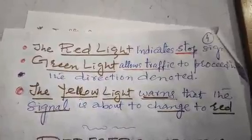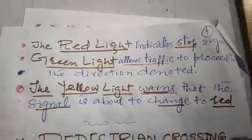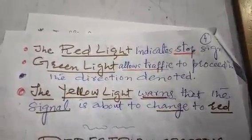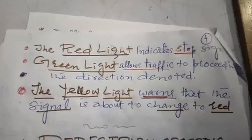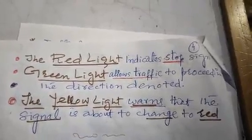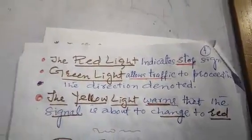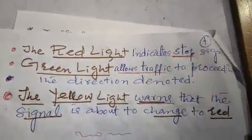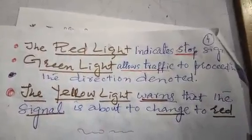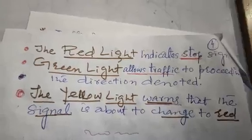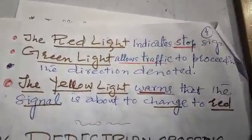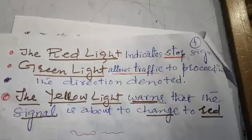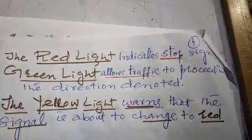The yellow light warns that the signal is about to change to red. As you will have noticed, after a green light there is not a direct switch to red — the green light is followed by a yellow light, which is a warning that the red light is coming. So the three signals are: red means stop, green means proceed, and yellow warns that the signal is about to turn red.